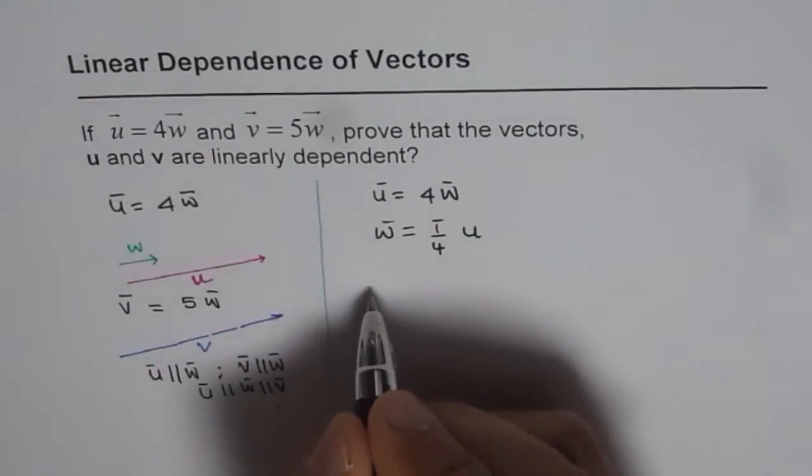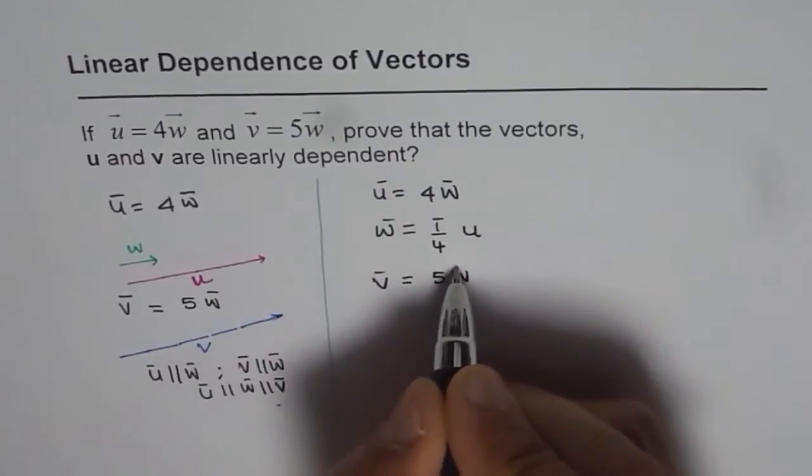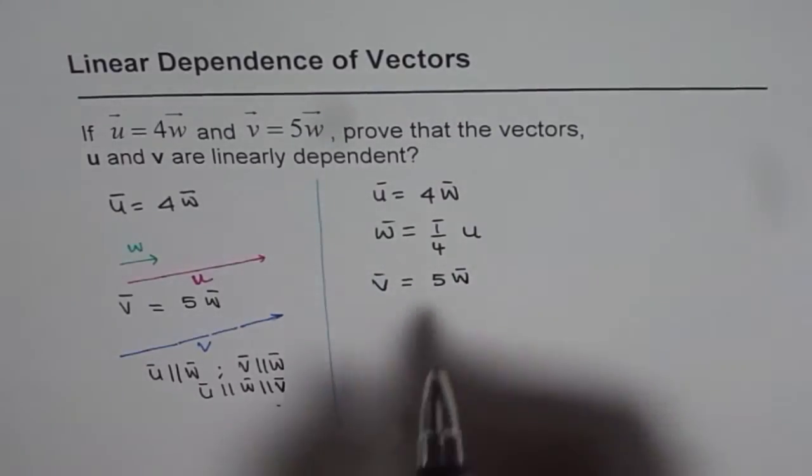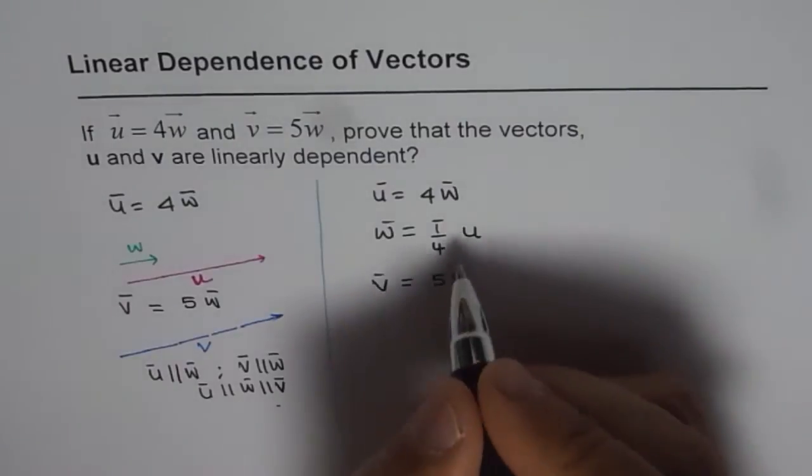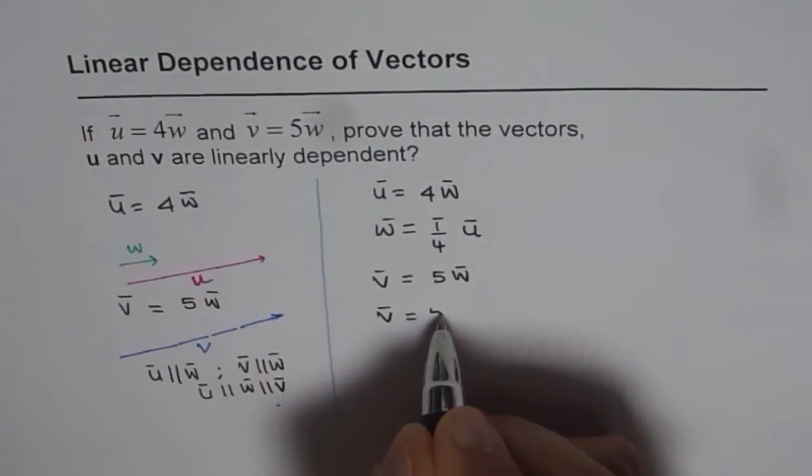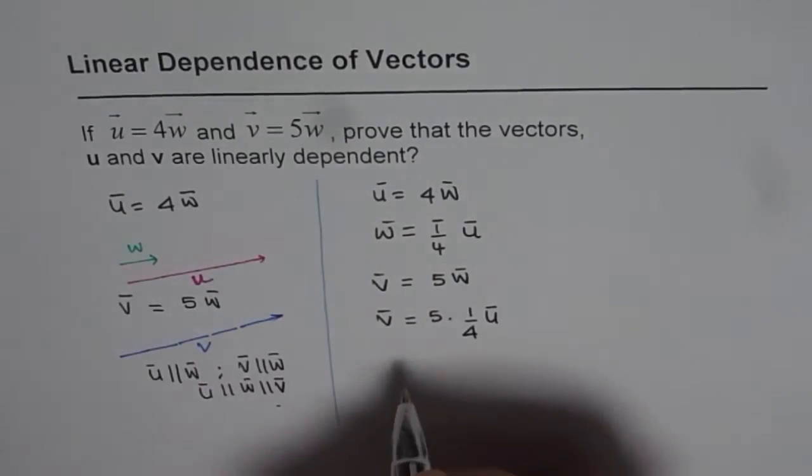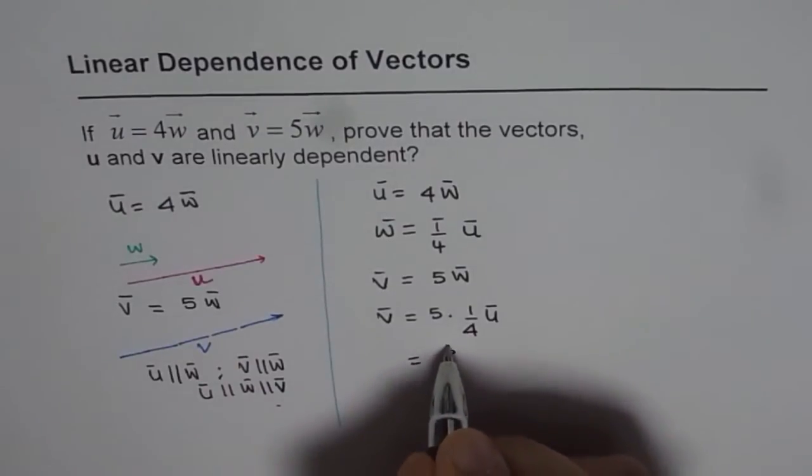We are saying v equals 5 times w. Vector v is 5 times w, but we know that w is 1/4 of vector u. Therefore, we can write vector v equals 5 times 1/4 of vector u, or v is 5/4 of vector u.